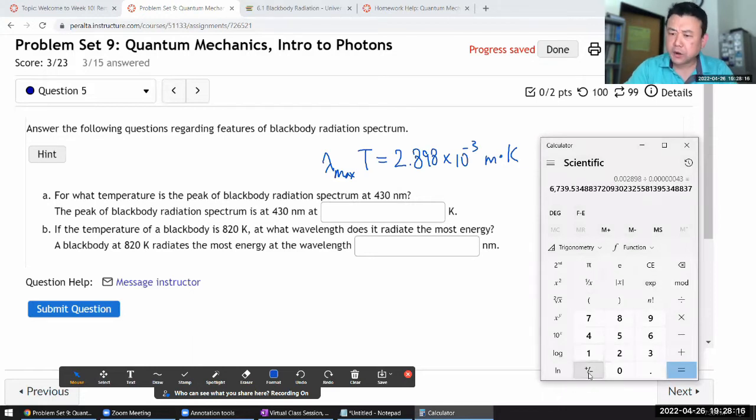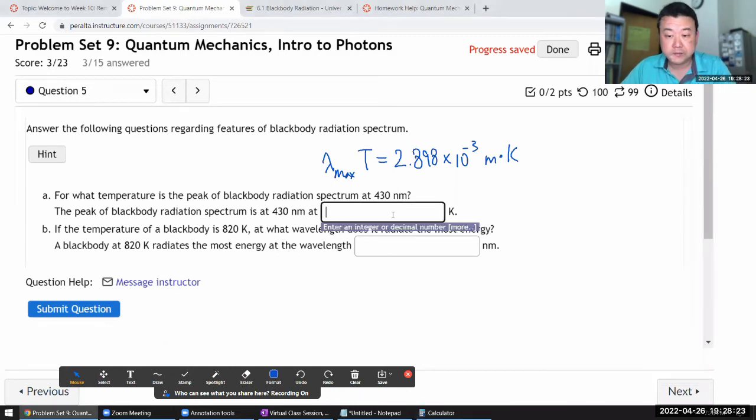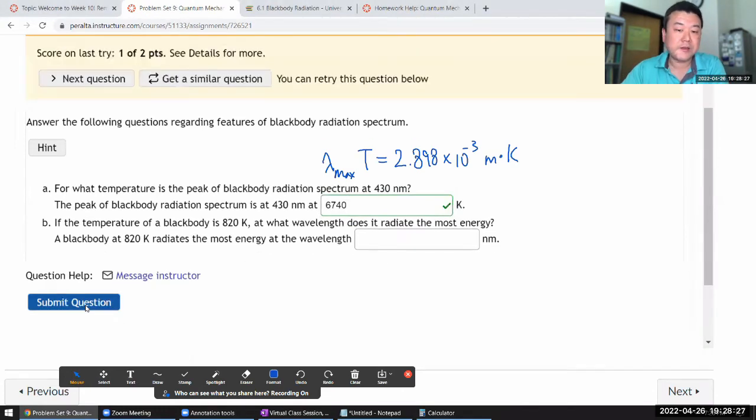It's going to be a large value—yeah, 6740 Kelvin. It's a little bit hotter than our sun.